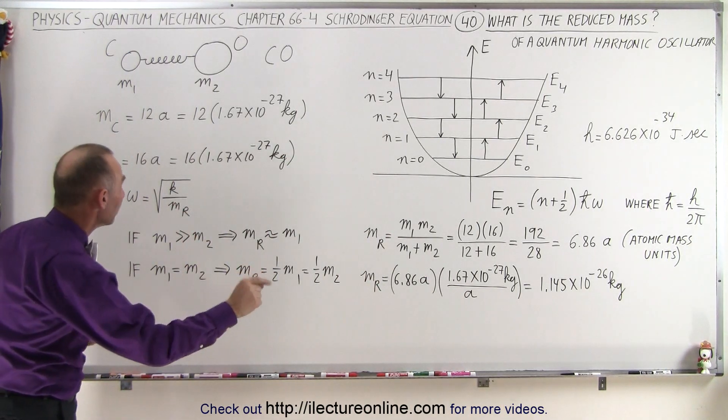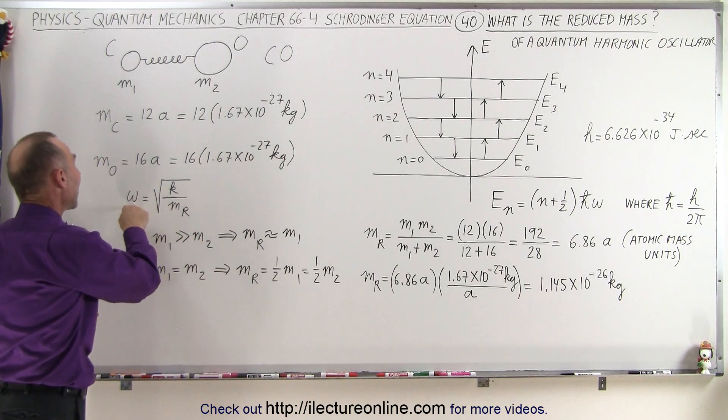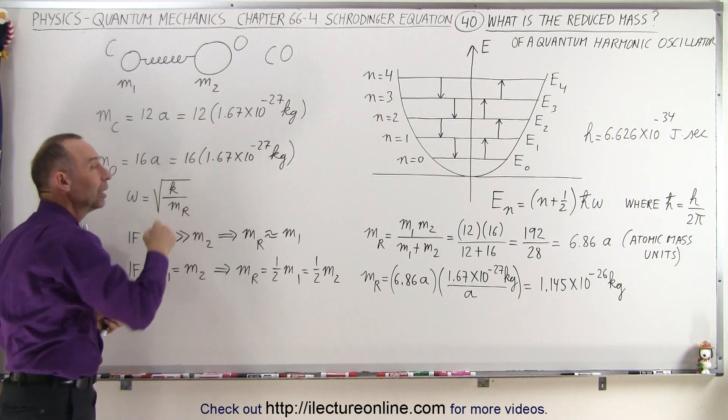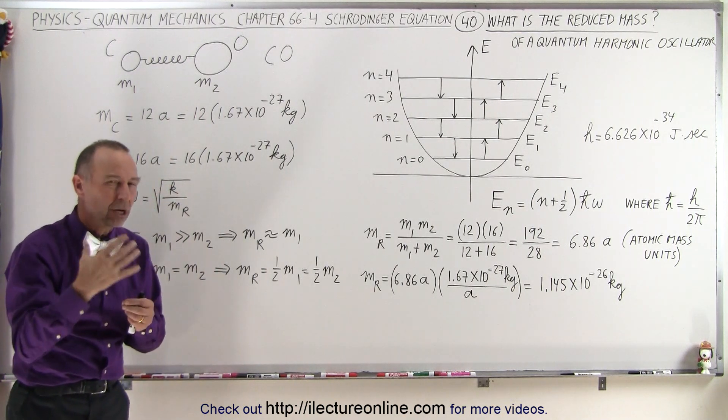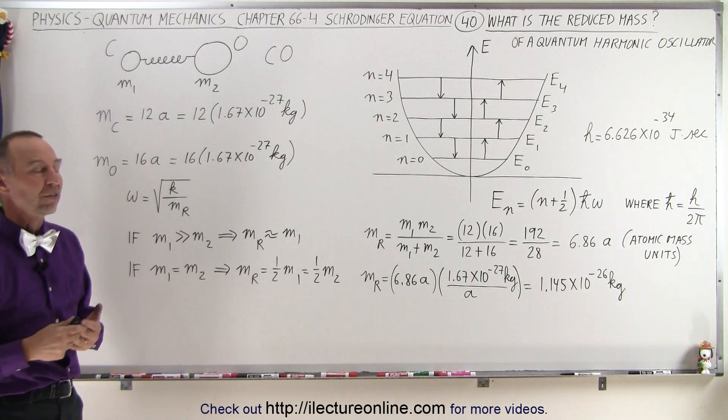So in other words, that would be the value you'd plug in for m sub r in here, and then to find the angular frequency of this particular molecule, we'd also need to know the spring constant, and we'll talk about that later. So now at least we understand what we mean by the reduced mass.